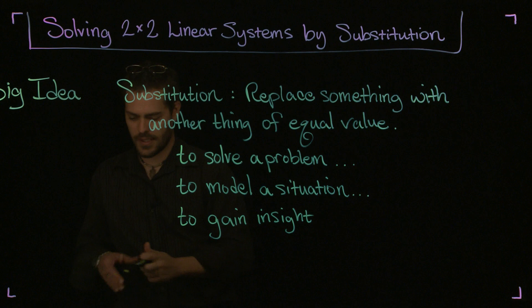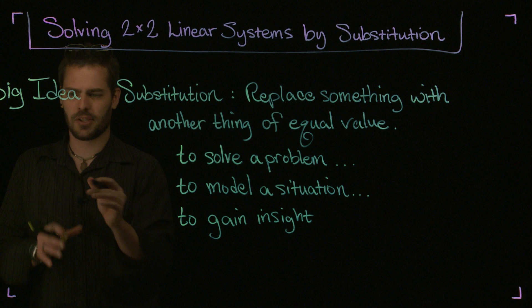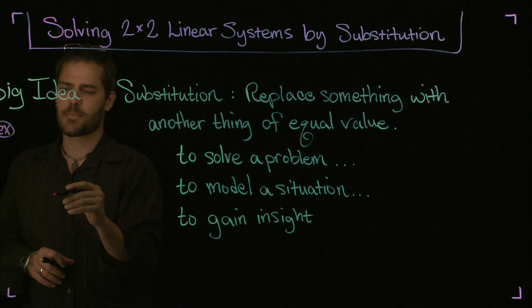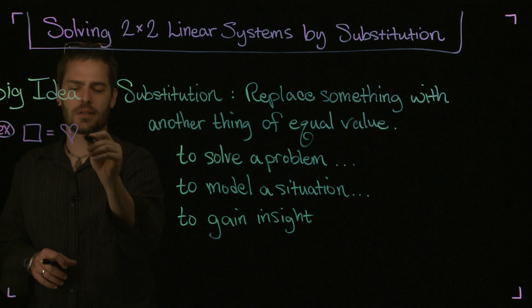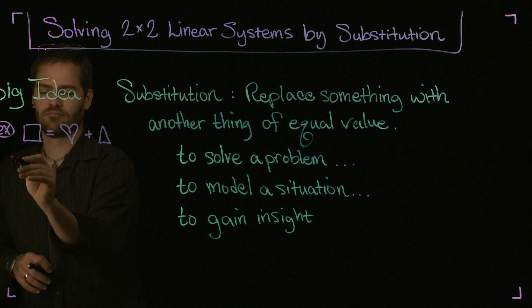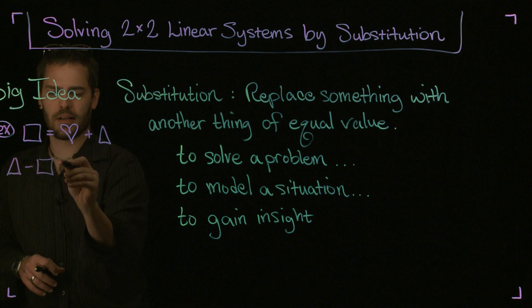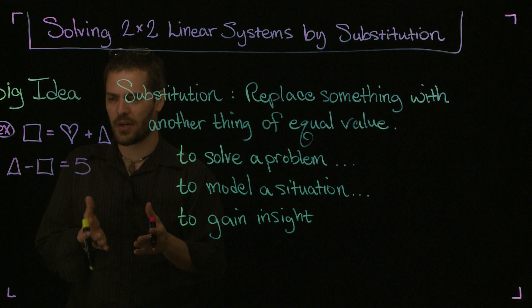Let me just illustrate one example of substitution with sort of generic symbols. Suppose I had square is equal to a heart plus a triangle. And, I don't know, a triangle minus the square is equal to 5.